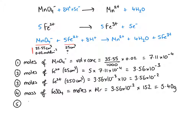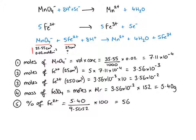To work out the percentage of iron in the original sample, we're going to divide our mass by the original mass that we weighed out, and as it's a percentage we need to multiply by 100. That gives a percentage of 56.8%.